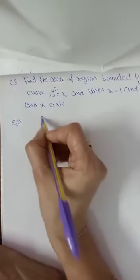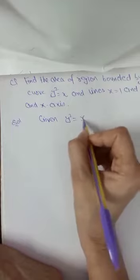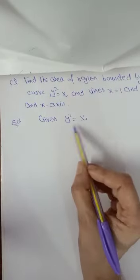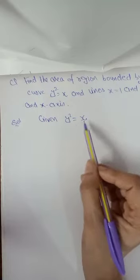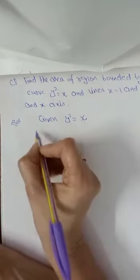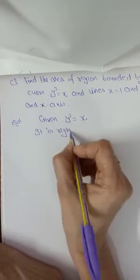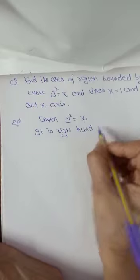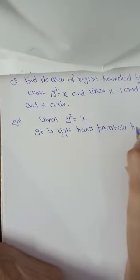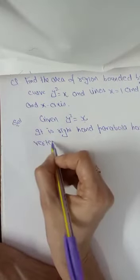Given y square equals to x. As I have told you, first point is to define the curve. So y square equals to x is a right hand parabola, so we will write it as right hand parabola having vertex at origin, that is at 0,0.